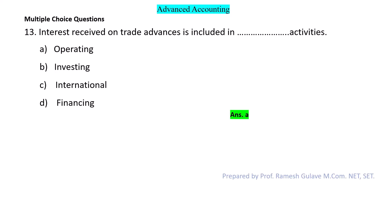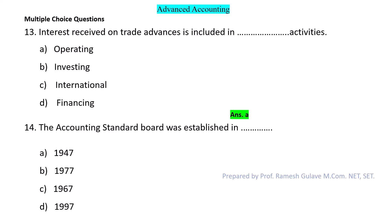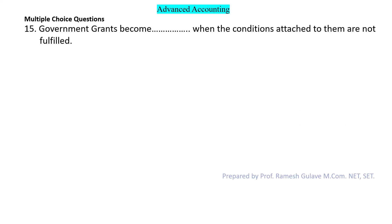Next question: The Accounting Standard Board was established in which year? This is a direct question about the establishment year of the Accounting Standard Board. It was established in 1977. So option B is the right answer.